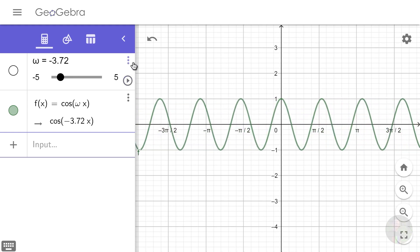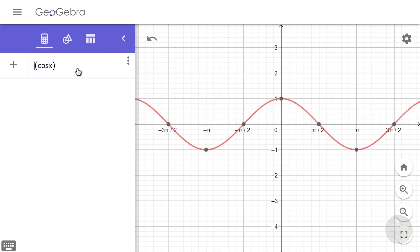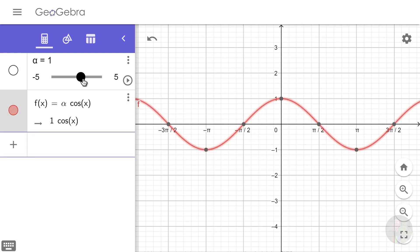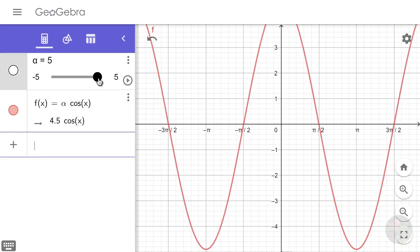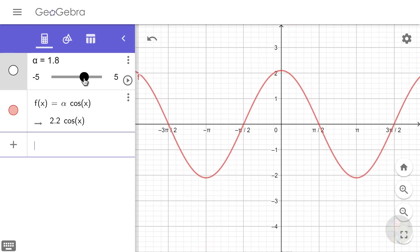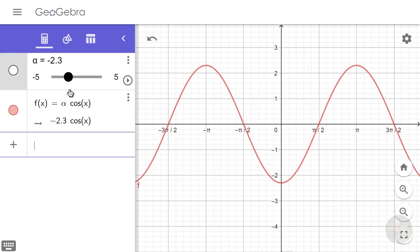Now let's see what happens if I multiply the whole cosine function with the variable, let's say alpha. As I increase the value, the cosine wave scales itself in y axis, and I can scale it to negative values as well.